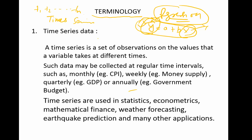In time series forecasting, you simply plot the trend of that variable and see what the pattern is over time. Based on the historical pattern, you extrapolate to the future. In normal regression you used independent variables to forecast Y, whereas in time series you use a model like yt = yt-1 plus some error term. We call this an AR model.